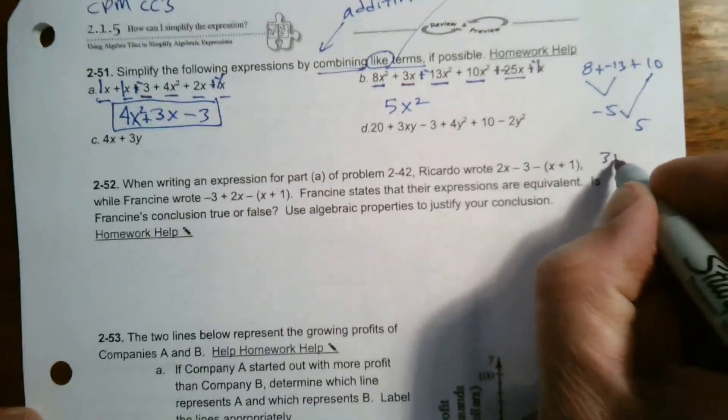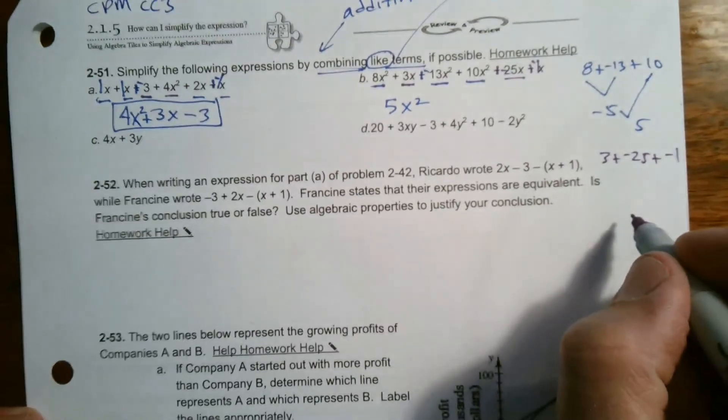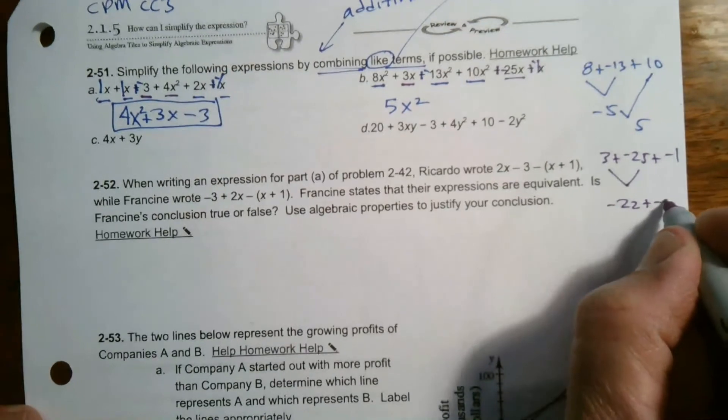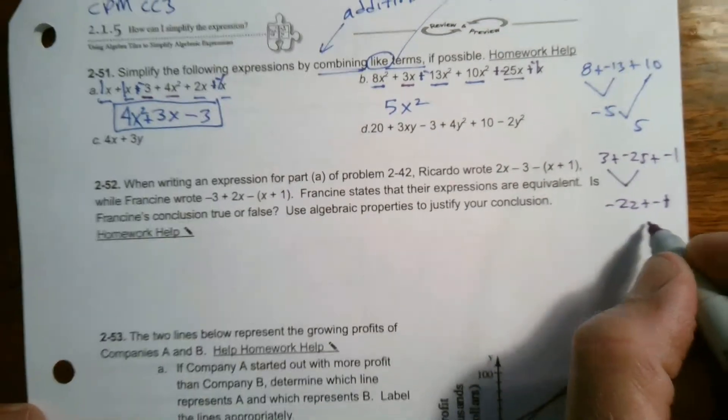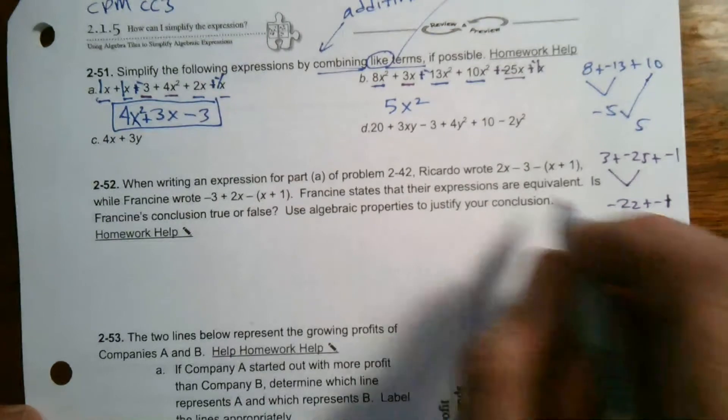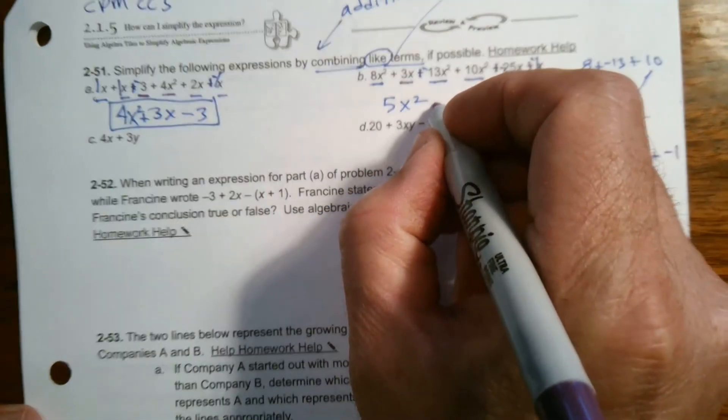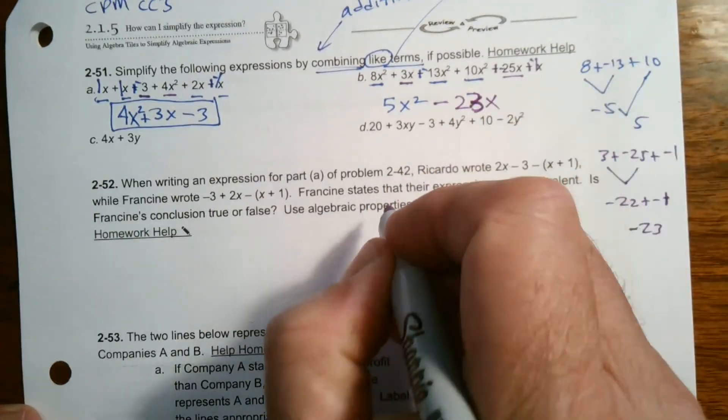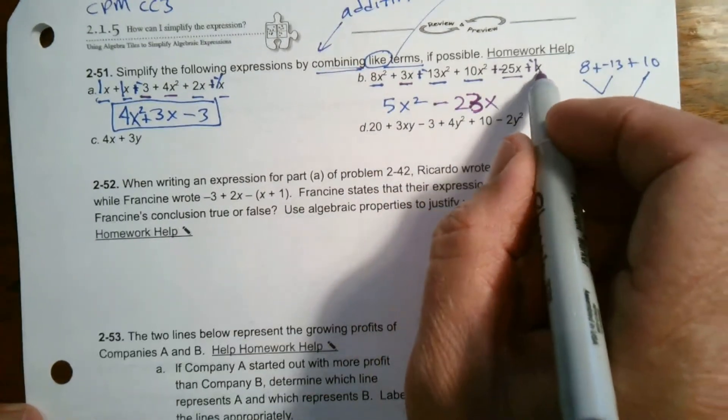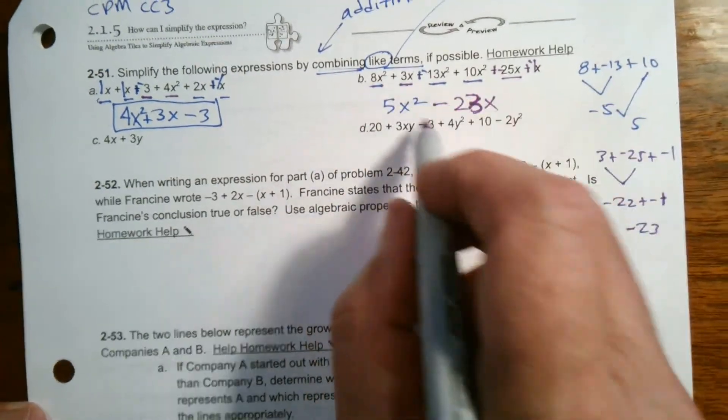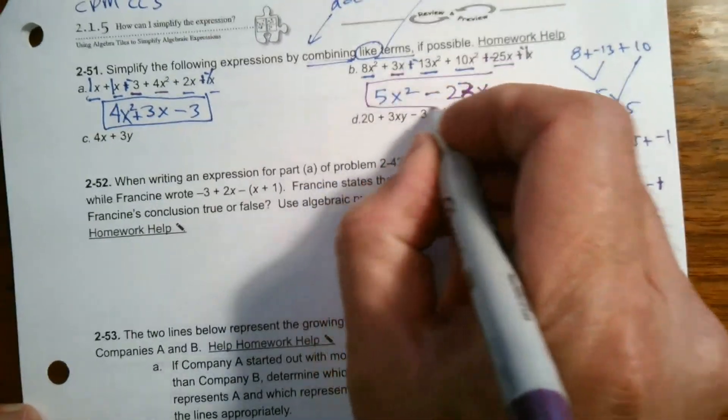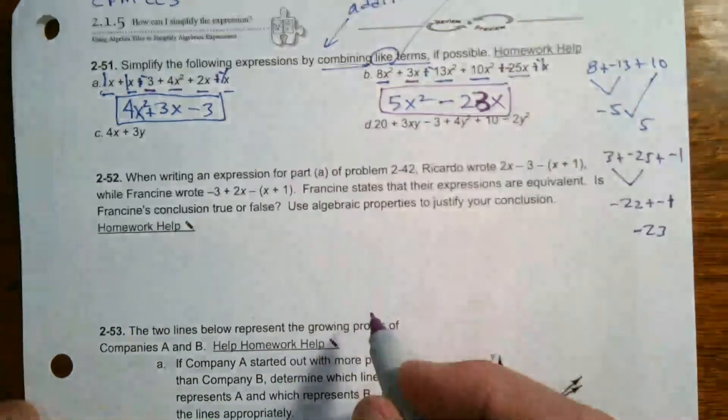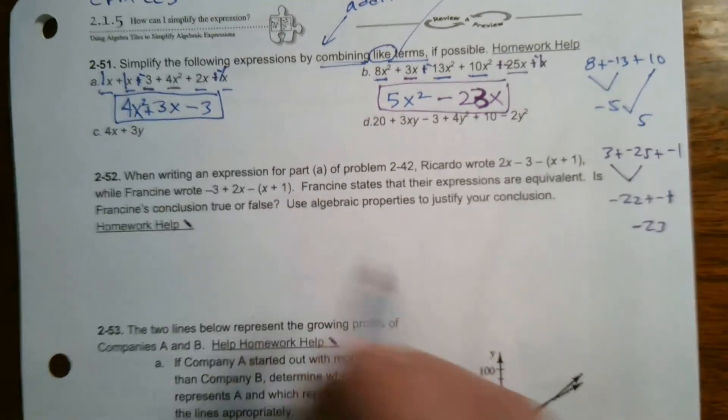So if I'm adding each of those up, I'll do it down here again, three plus negative 25 plus negative one. So I just add three and negative 25 gives me negative 22, negative 22 and negative one would become negative 23. So I end up with a negative 23, or I could say minus 23 X. And I think that's all my terms. There's no constant. So that was just X terms and X squared terms. So this is the answer for B, five X squared minus 23 X.